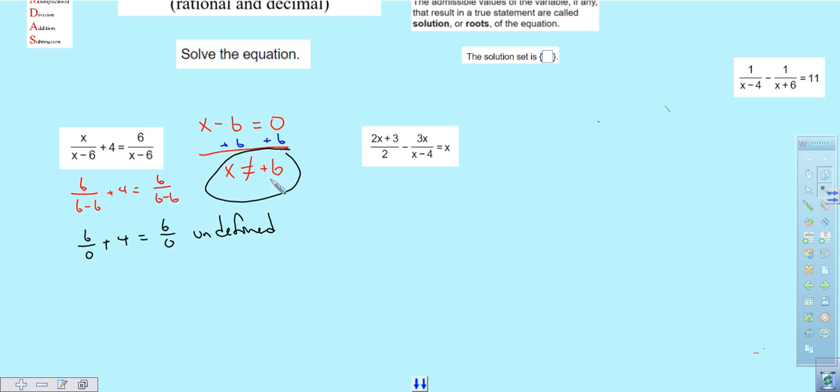Okay, so take a look at this guy right here. We have a denominator of 2 and a denominator of x minus 4. So the 2 doesn't do anything. We don't set that equal to 0 because the denominator is a 2. But we take the x minus 4, we set it equal to 0, and we find out x cannot be equal to positive 4.